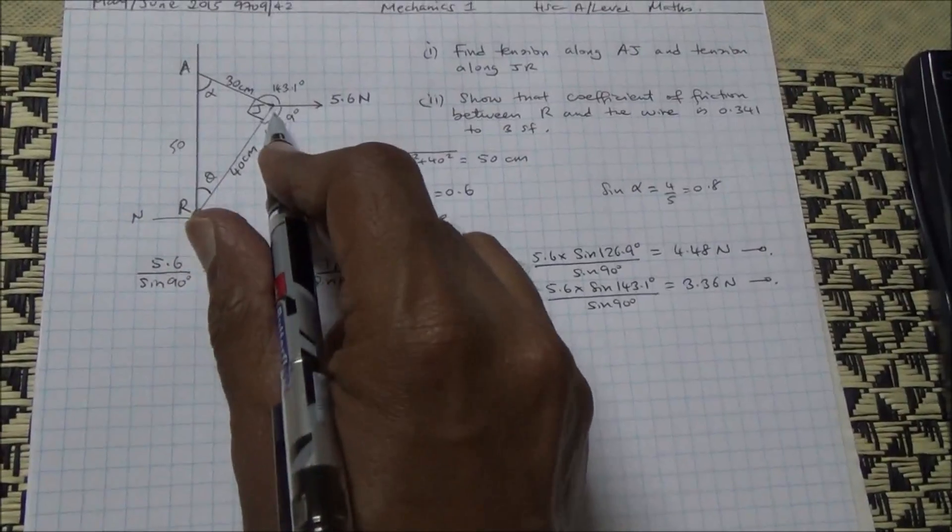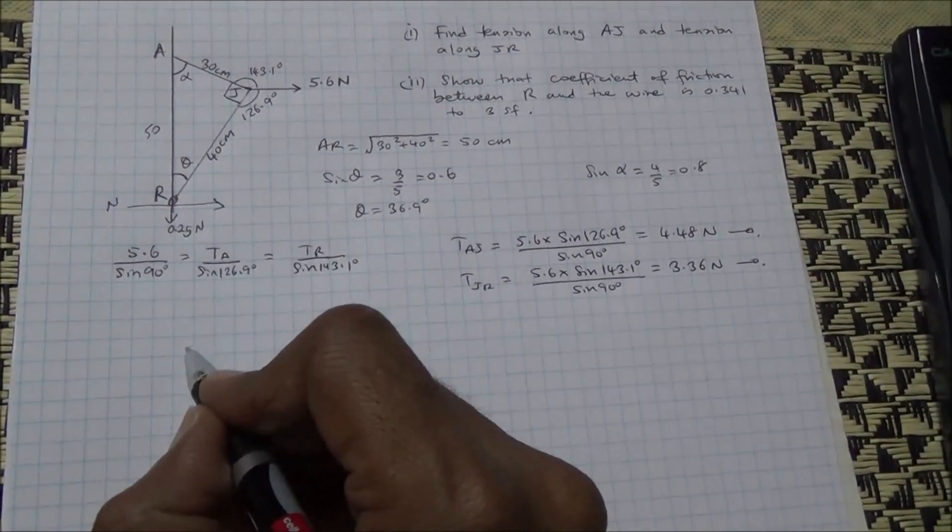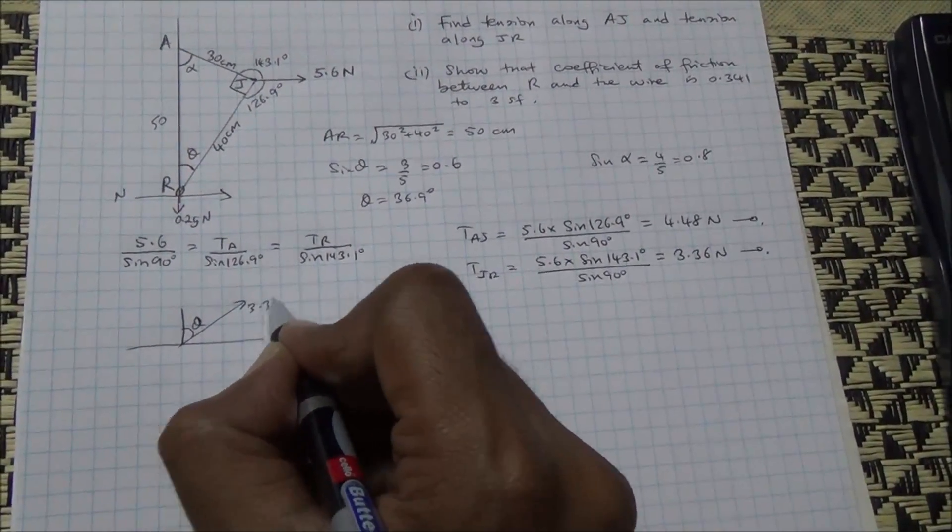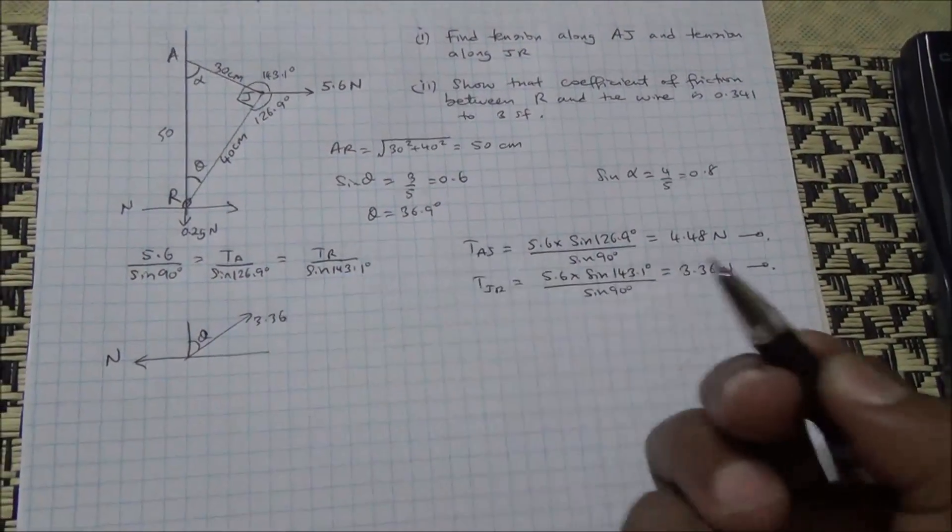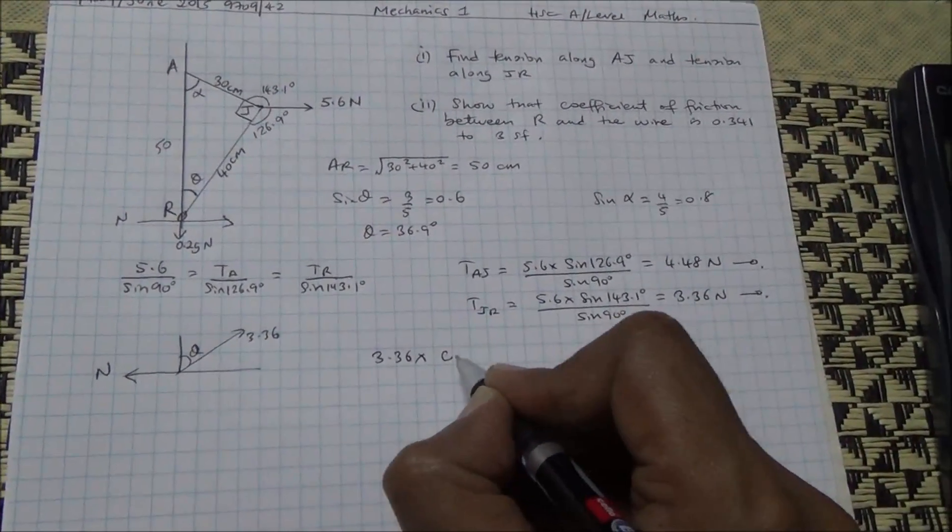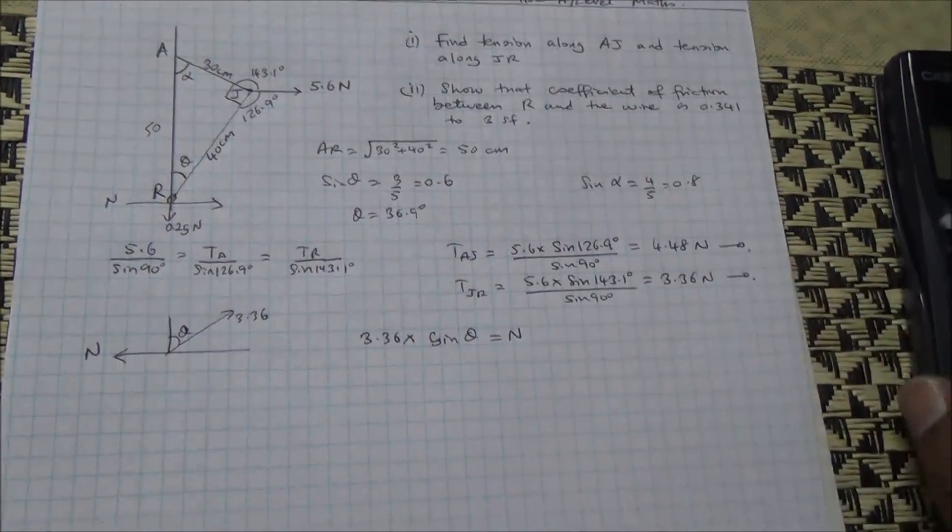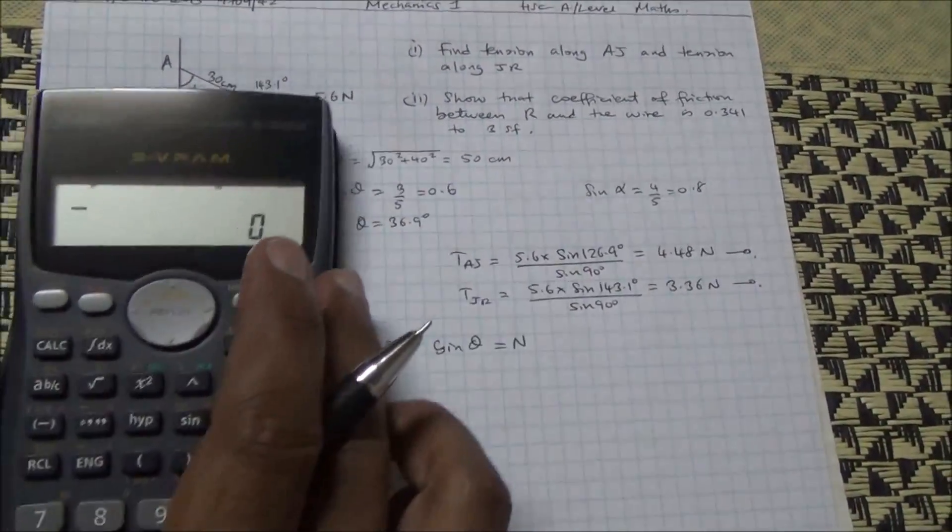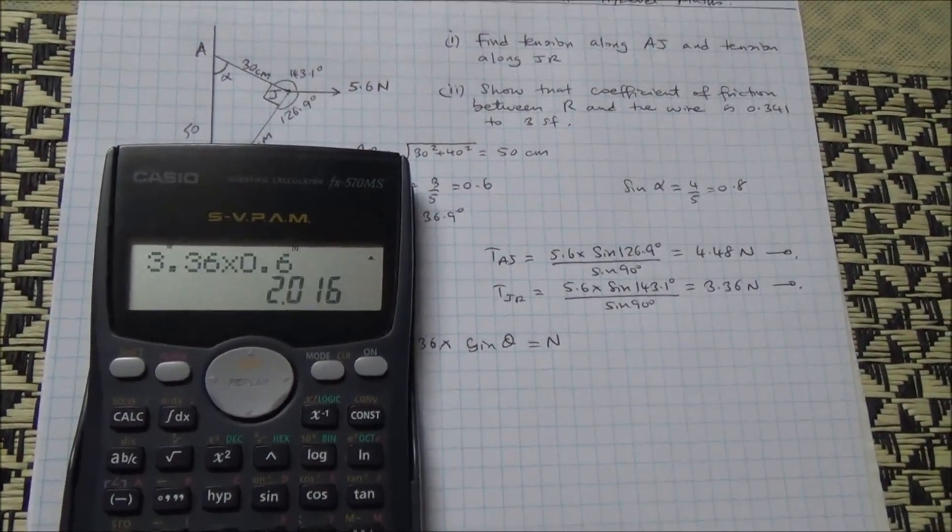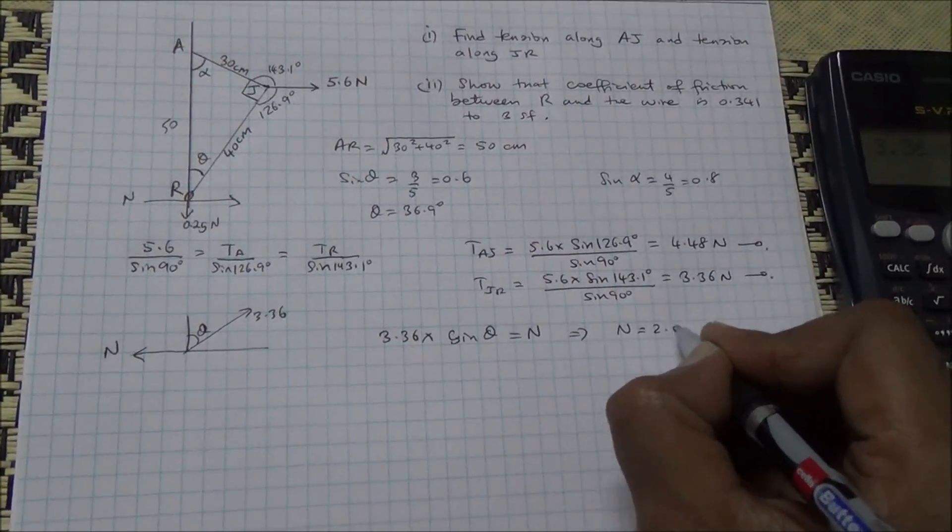I've got the tension here in that string JR. Tension in JR is 3.36. Therefore, the angle is here, 3.36. This is the contact force normal, which is N. So I'm going to say 3.36 times the sine of theta is equal to N. And therefore the sine of theta is 0.6. So we have 3.36 times 0.6 equals 2.016. So N is going to give us 2.016 Newtons.